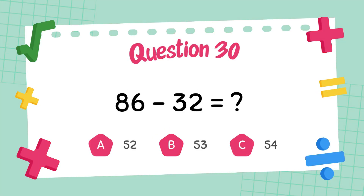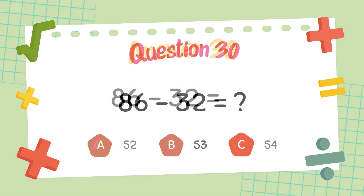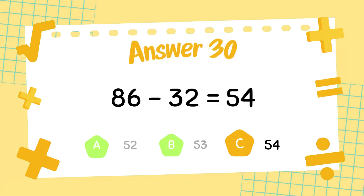What is eighty-six minus thirty-two? The answer is fifty-four.